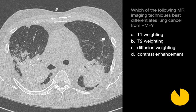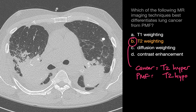Which of the following MR imaging techniques best differentiates lung cancer from PMF? With lung masses, we always worry about the possibility of lung cancer. What's interesting is that MR imaging, especially T2-weighted imaging, can be helpful. T2-weighted imaging with PMF is expected to show that the masses are low in intensity, because it's mostly just chronic fibrosis. If it were cancer, we'd expect these masses to appear hyperintense on T2 imaging. So T2 helps us distinguish PMF from lung cancer.